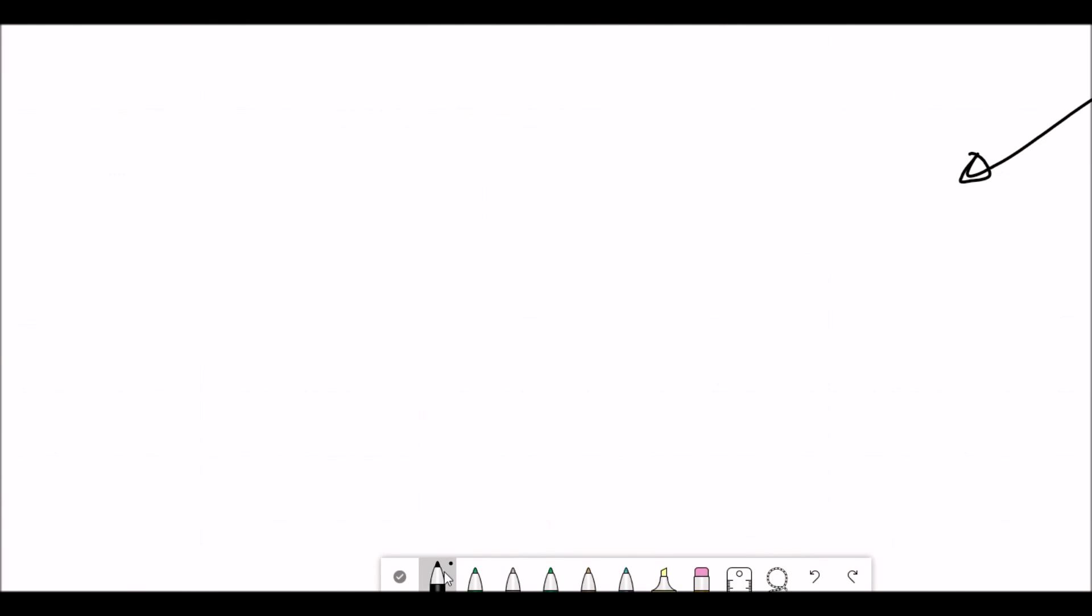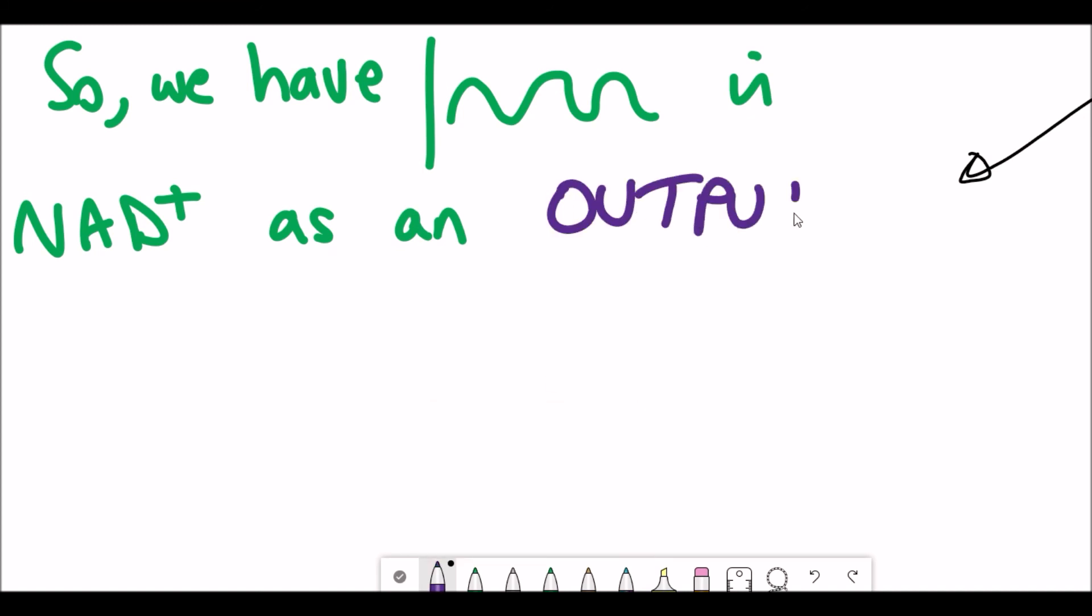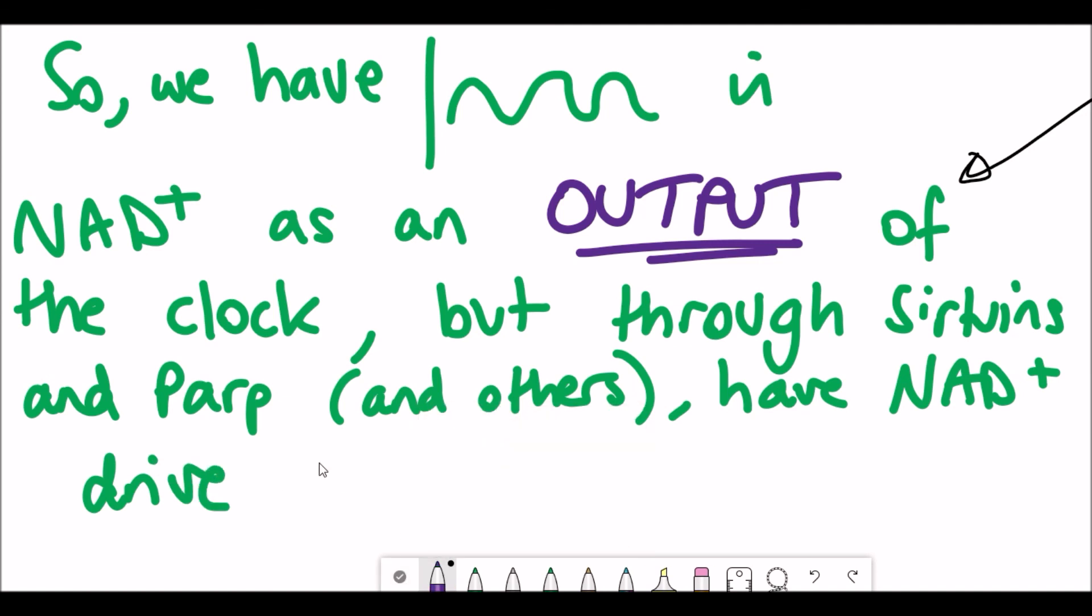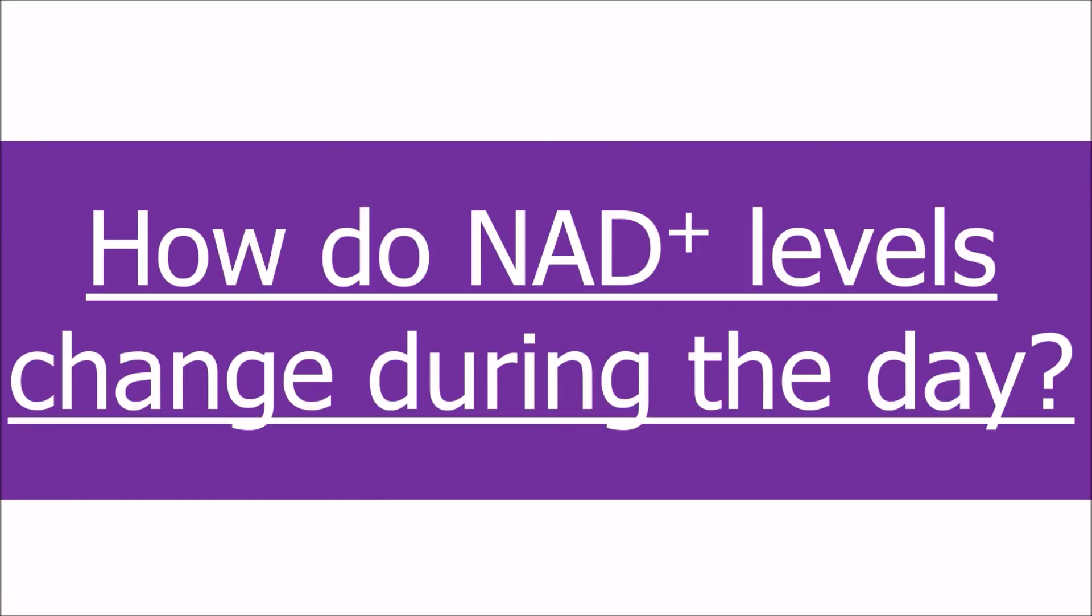So in case I lost some of you, let's just summarize and reiterate what I've just been saying. So based on the research, we can see that there's circadian fluctuations in NAD+, and this is as an output of the clock through the circadian regulation of NAMPT. But we also see that through the activity of sirtuins and PARP1, it can also modulate and regulate the clock as well, so it acts as an input.